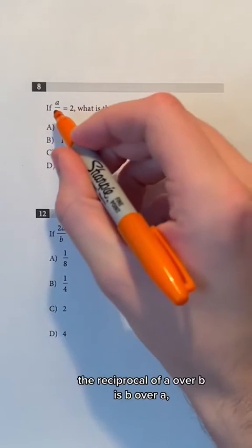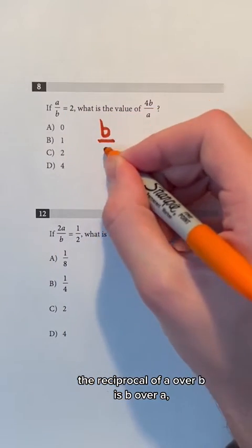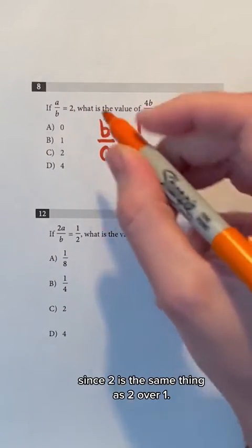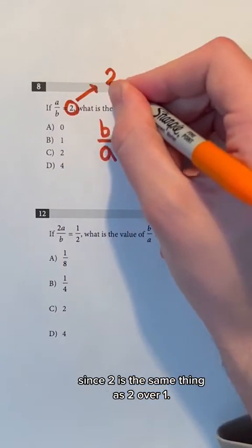For the first question, the reciprocal of A over B is B over A and the reciprocal of 2 would be 1 half since 2 is the same thing as 2 over 1.